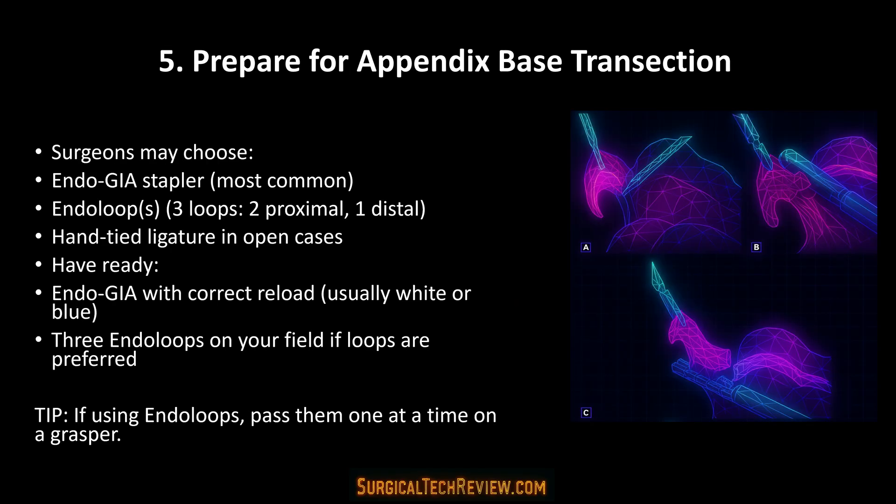Appendix base transection is one of the most delicate parts of the procedure — separating the appendix from the cecum. The surgeon may use a stapler, endo loops, or a hand-tied ligature in open cases. If endo loops are used, pass them one at a time on a grasper and remember the rule: two loops proximal, one loop distal. This ensures a secure closure and avoids contamination. Being calm and steady-handed here is crucial — this is where the appendix is officially removed.